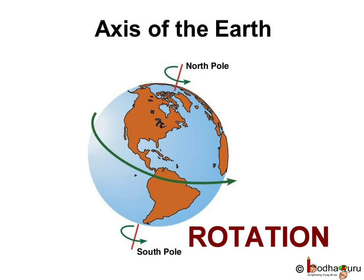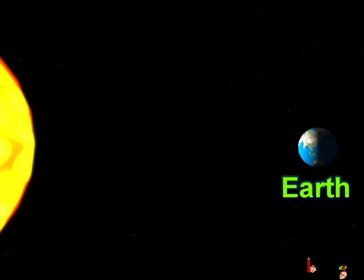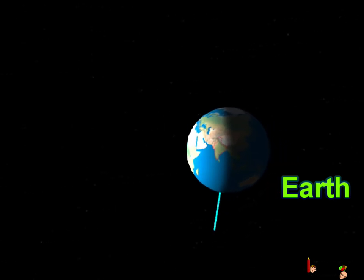Now, I am sure you must be wondering what it has to do with day and night. So, let's look at this video to understand why there is day and night. As you can see, a bright yellow ball that is the sun on the left side and a small blue ball that is our Earth on the right side. Let's zoom in further to see the Earth closely.